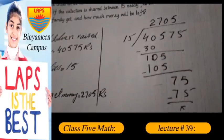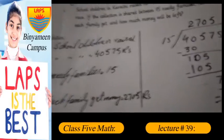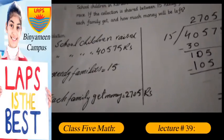2,705 rupees - each family gets this amount.